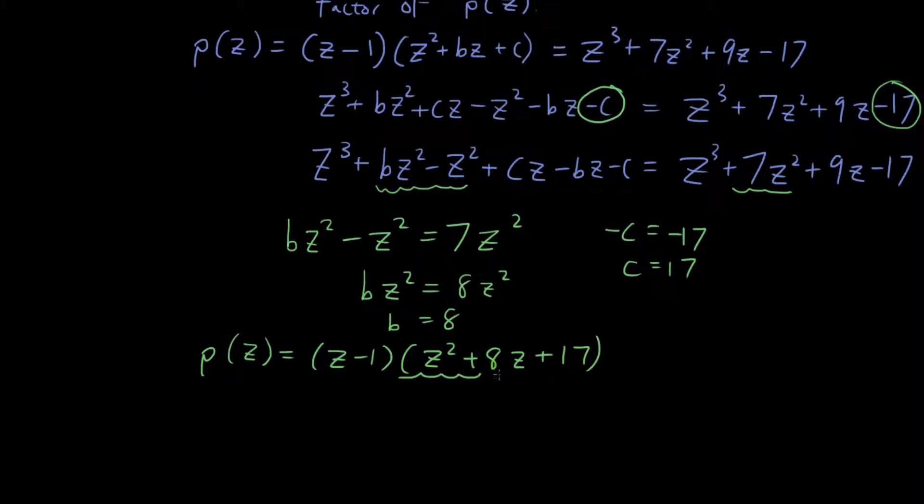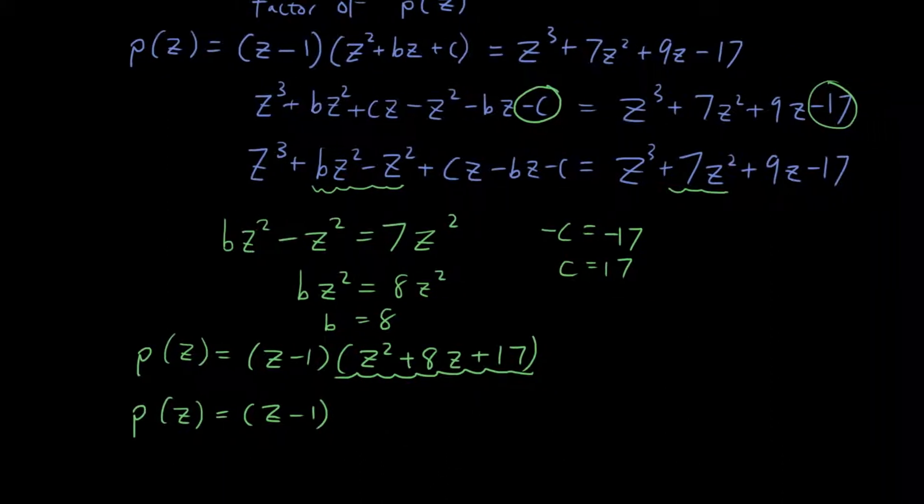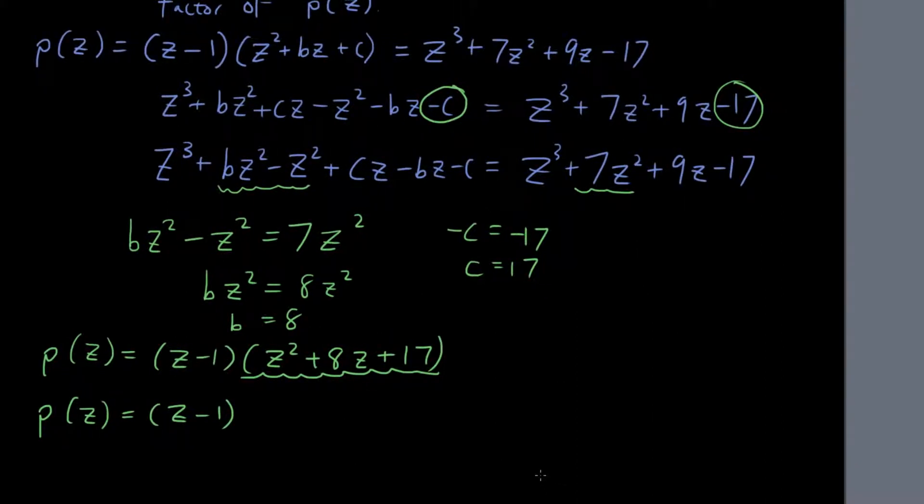And now I just have to factorize this bit, which is the quadratic. So how do we factorize that? If you guys remember, in the last tutorial, a couple of tutorials ago, in lesson 21 or something like that, to factorize a quadratic over C. What you have to do is you have to complete the square.